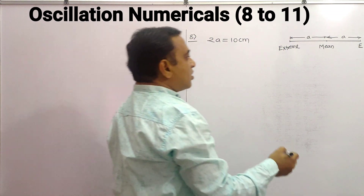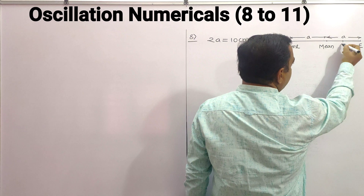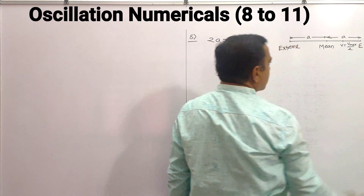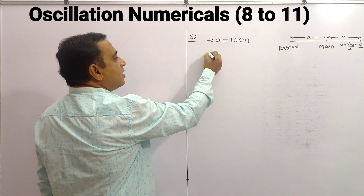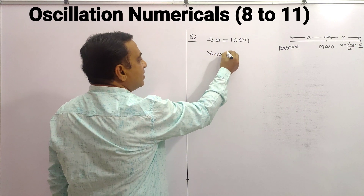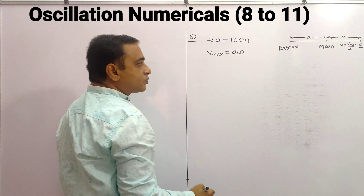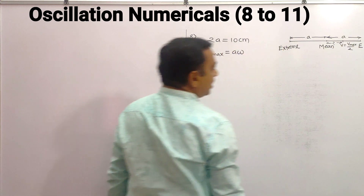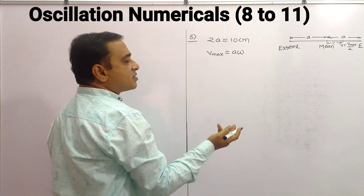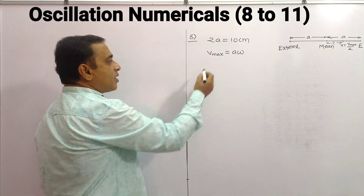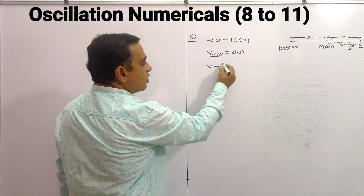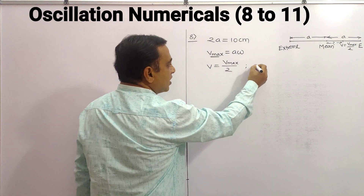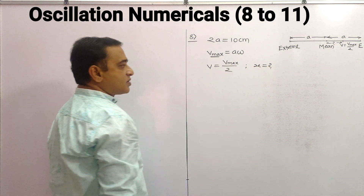Also given: we need to find the distance from the mean position where velocity is equal to half the maximum velocity. We know that v_maximum equals a·ω. We need to calculate the distance x at which velocity equals v_max divided by 2.